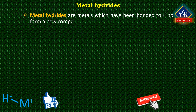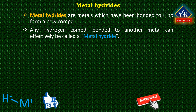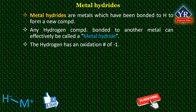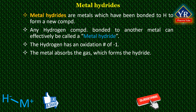Metal hydrides are metals which have been bonded to hydrogen to form a new compound. Any hydrogen compound that is bonded to another metal element can effectively be called a metal hydride. Generally, the bond is covalent in nature, but some hydrides are formed from ionic bonds. The hydrogen has an oxidation number of minus one, and the metal absorbs the gas which forms the hydride.